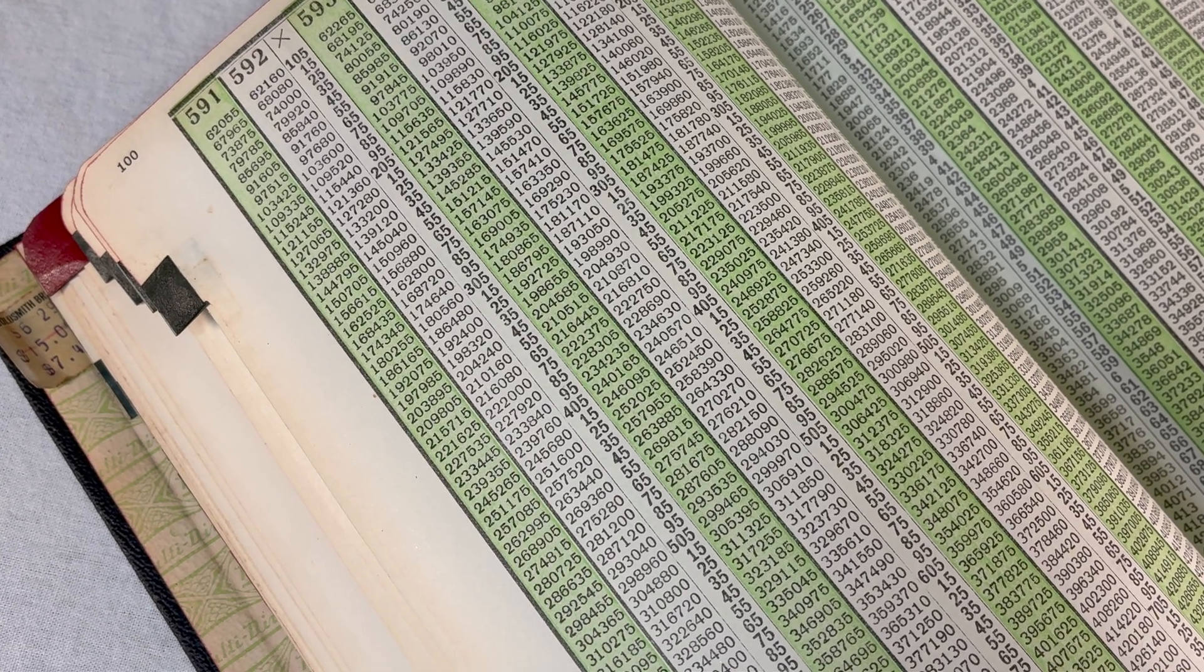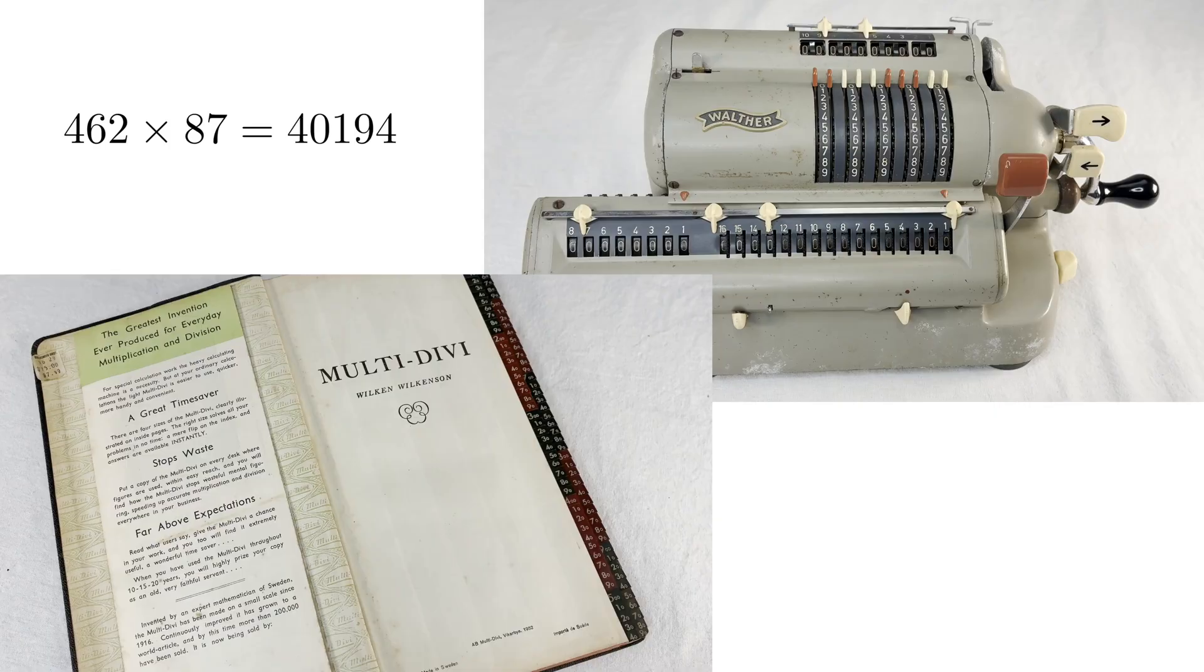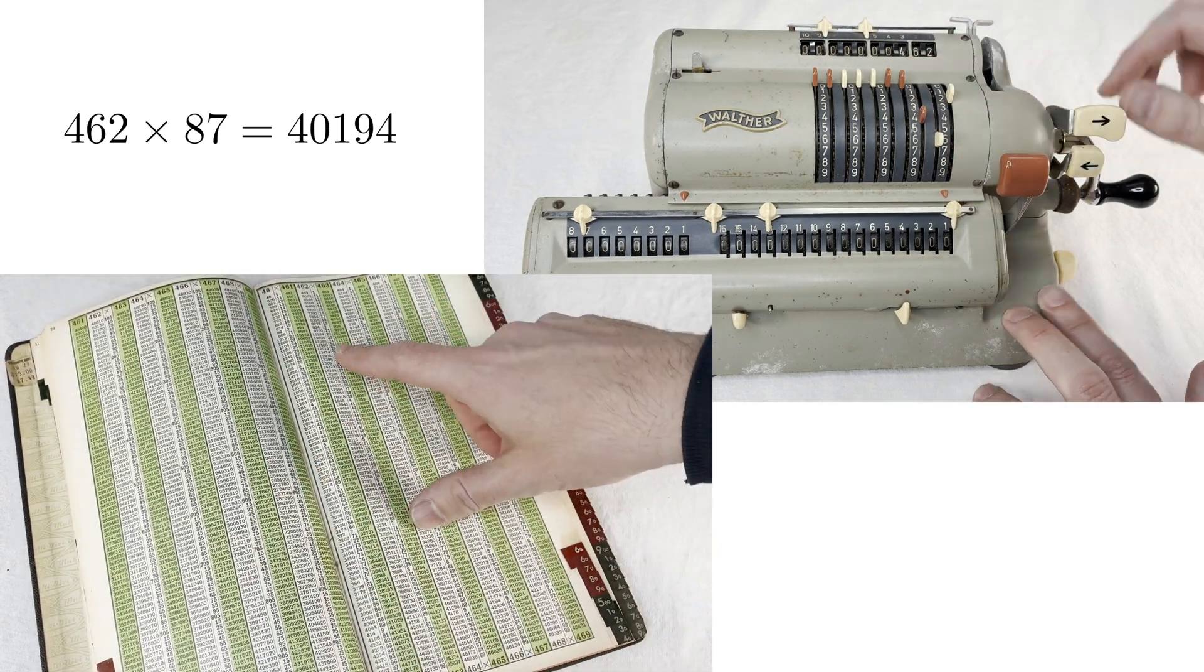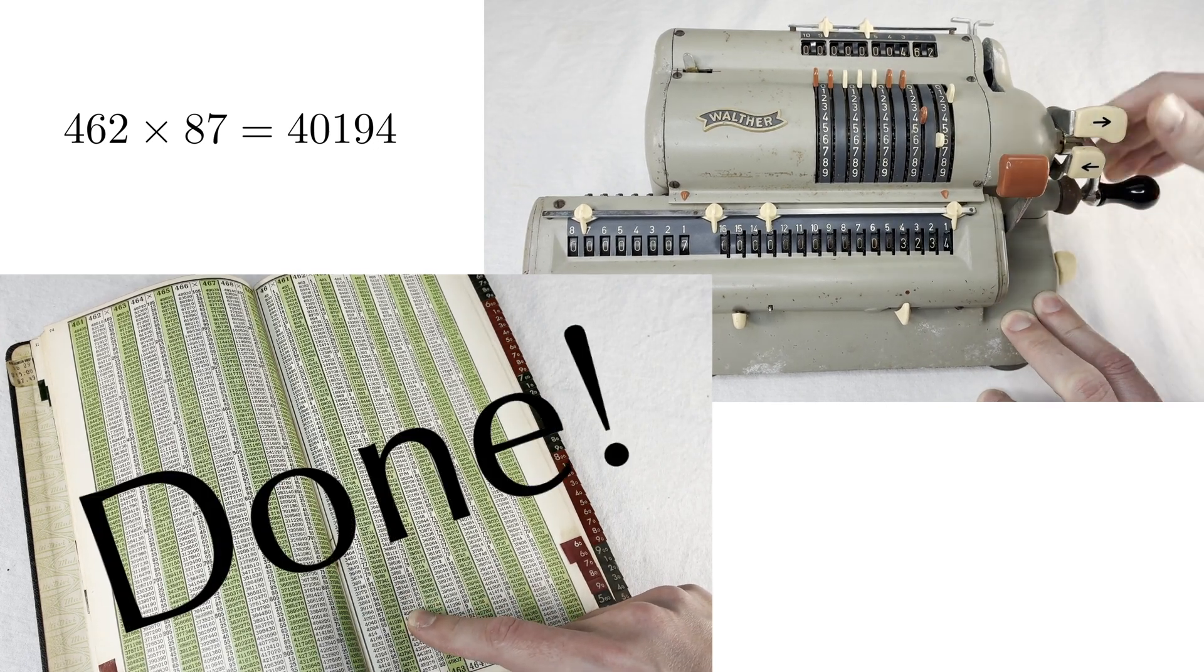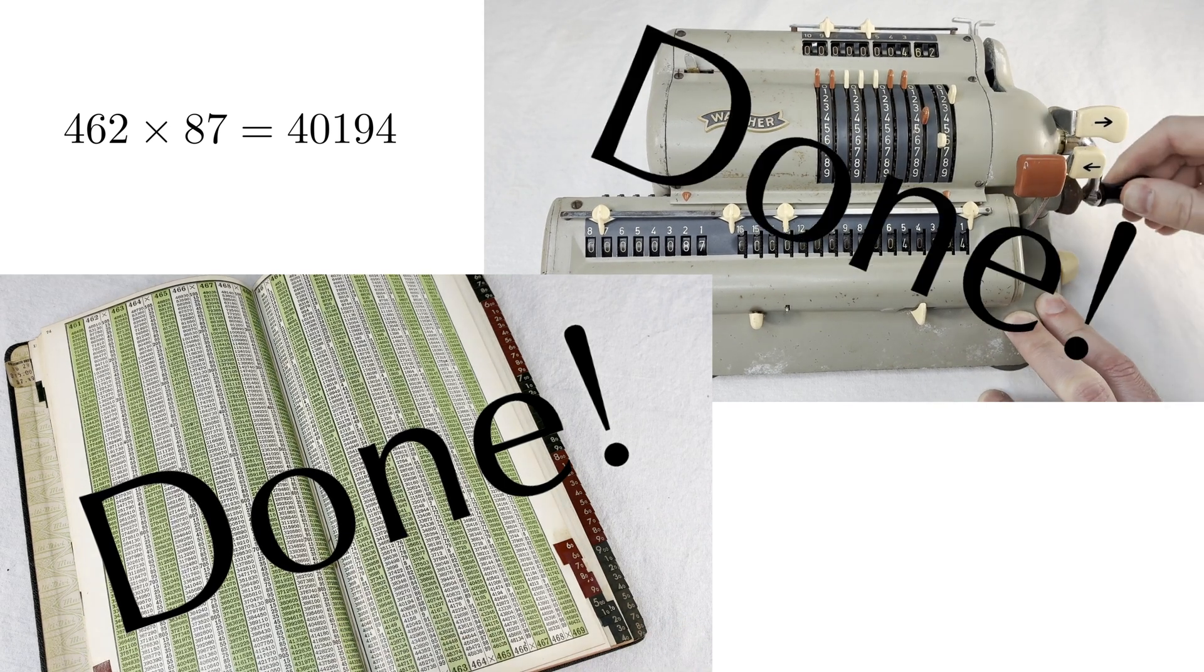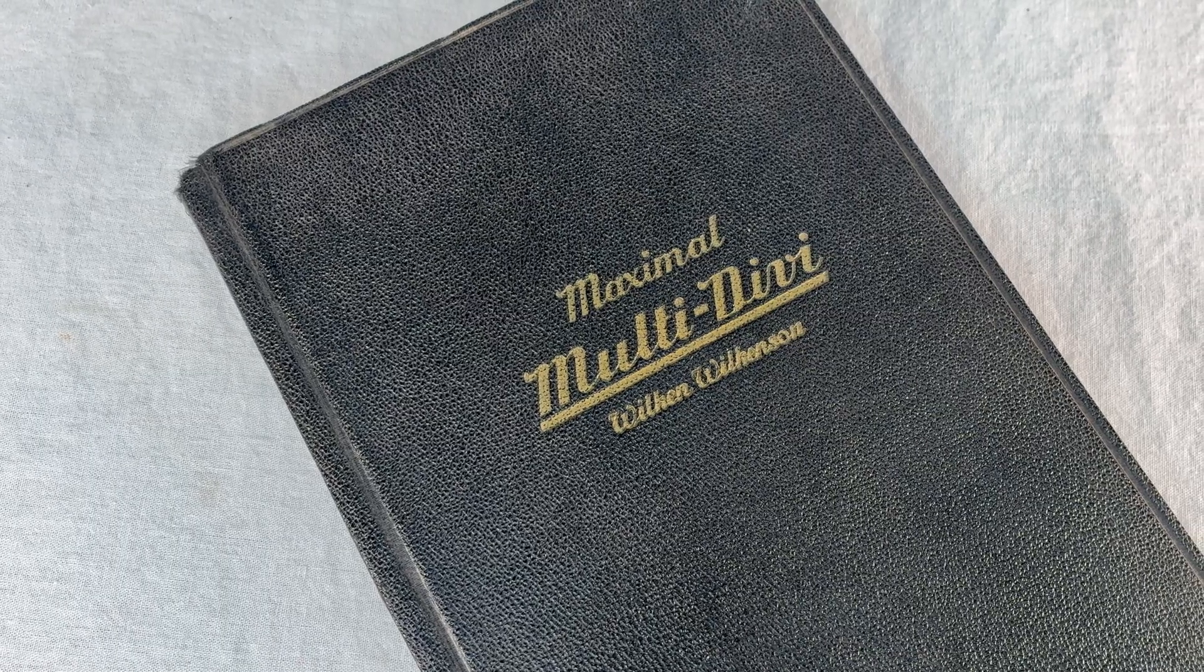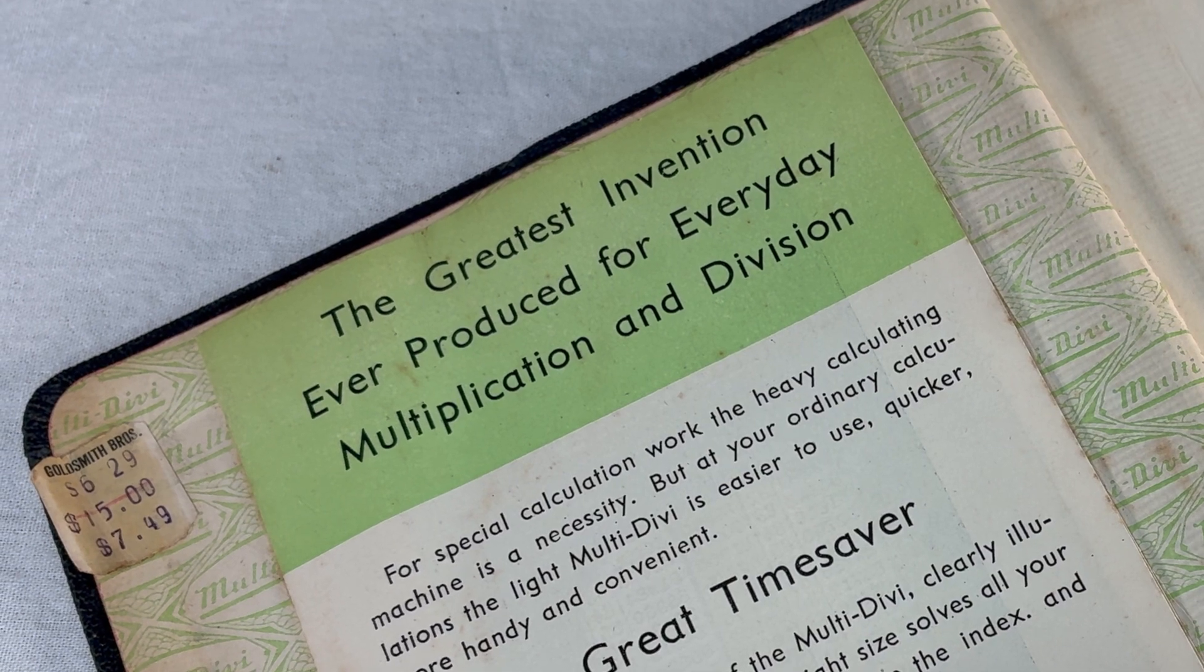Hey, let's have a race. I'll try the multi-divi against my Walter WSR 160. This Walter is from the 1960s, but it works the same as machines that would have been available even in the 1800s. Well, I guess the multi-divi really is faster than machines. Maybe this really is the greatest invention ever produced. I don't know.